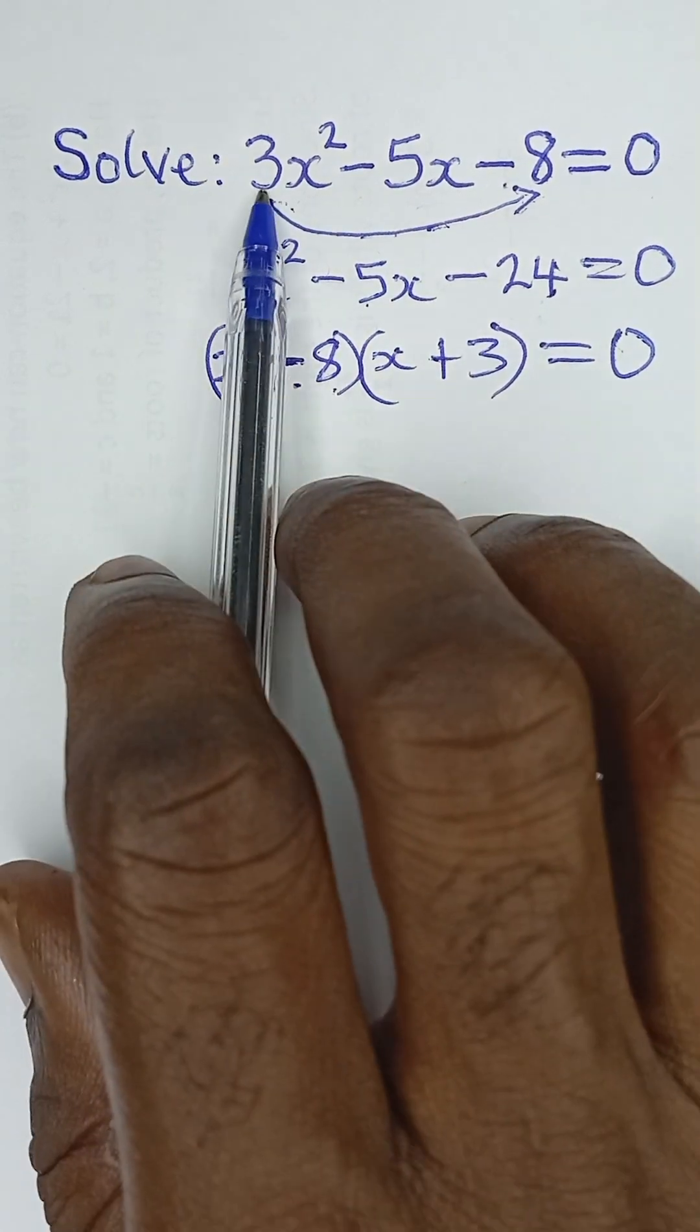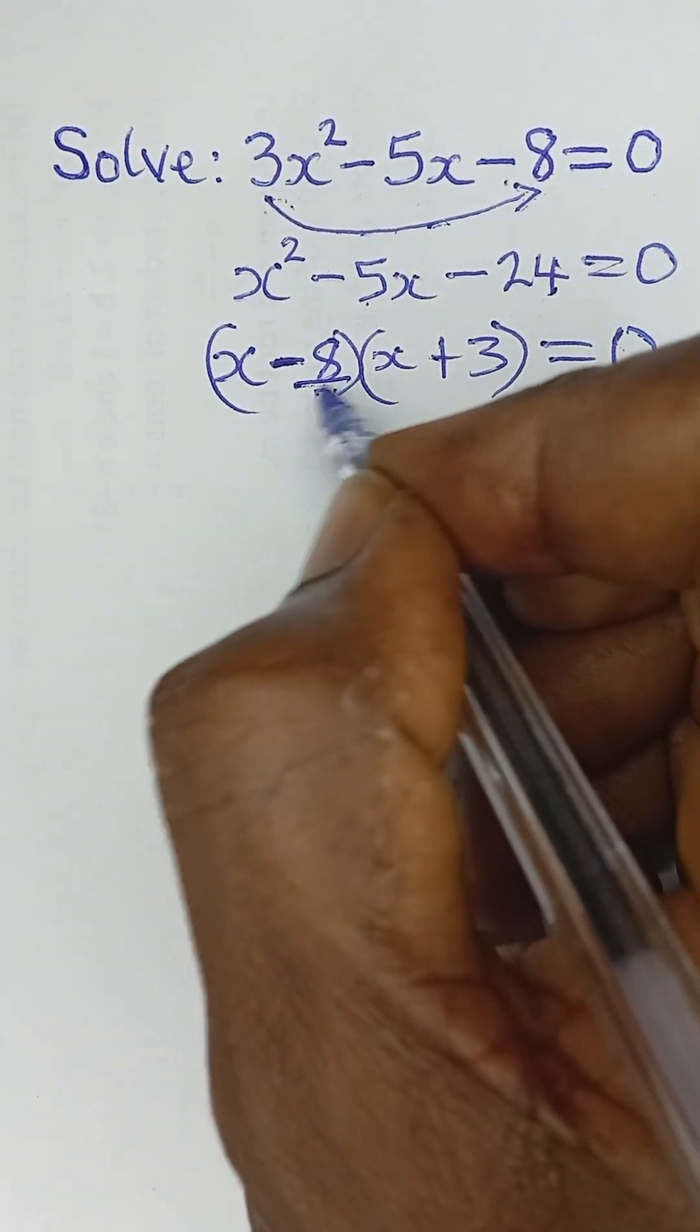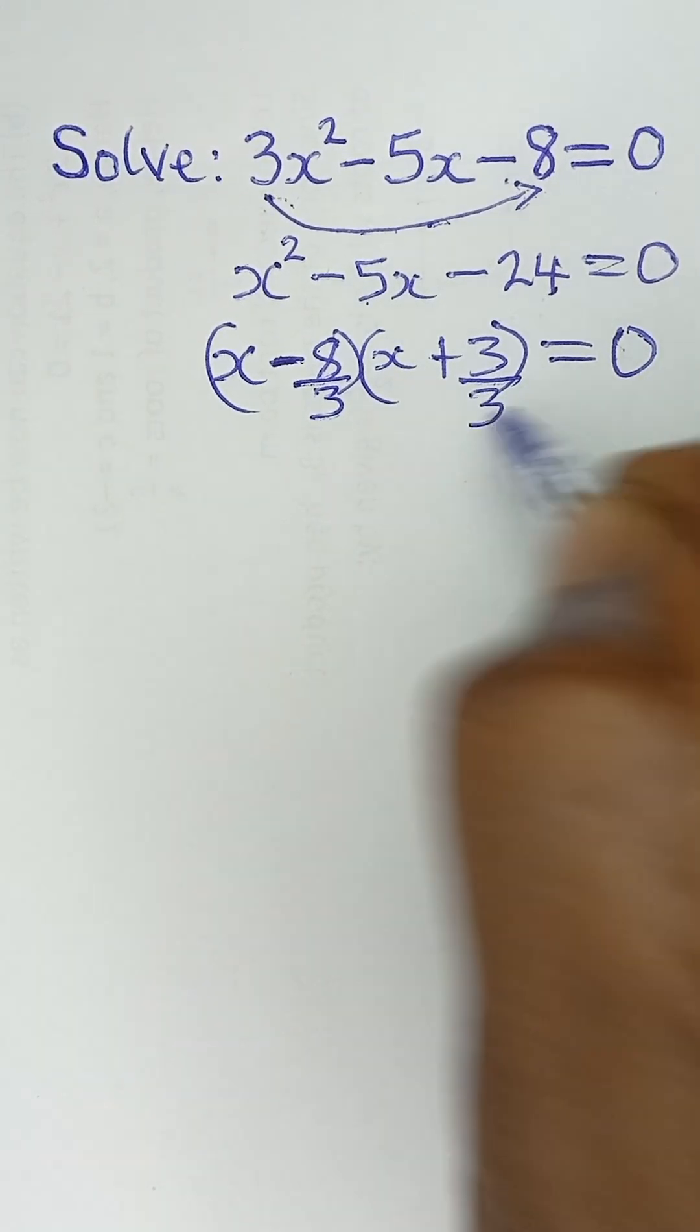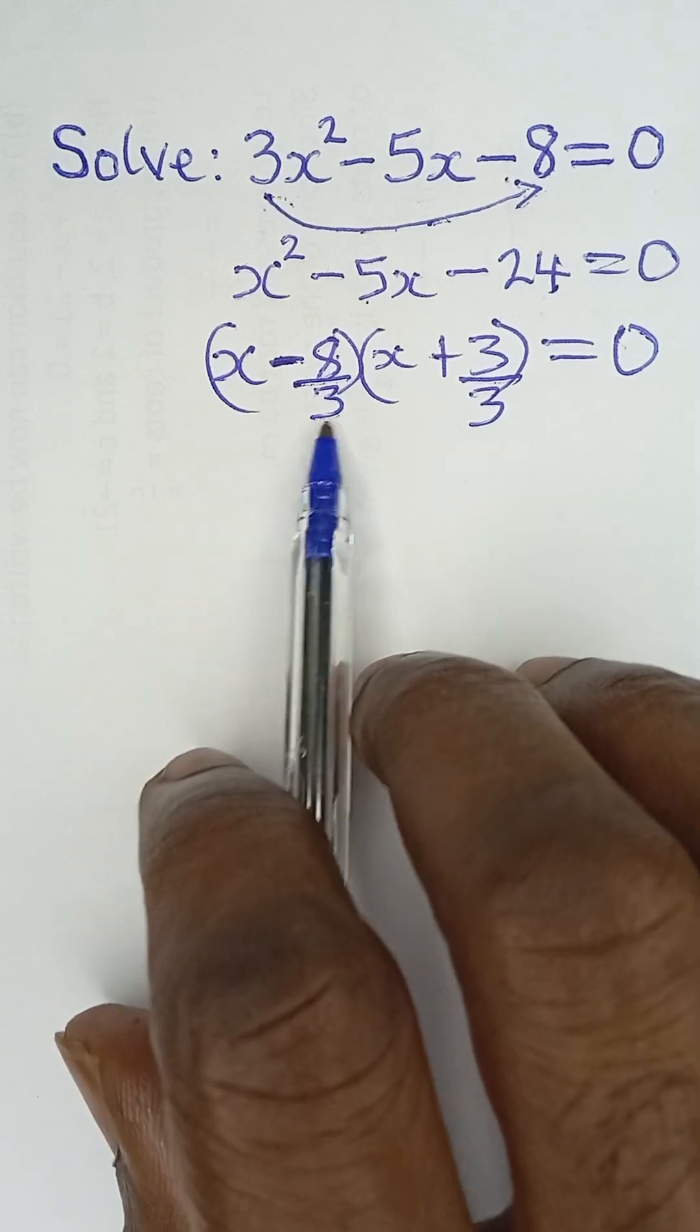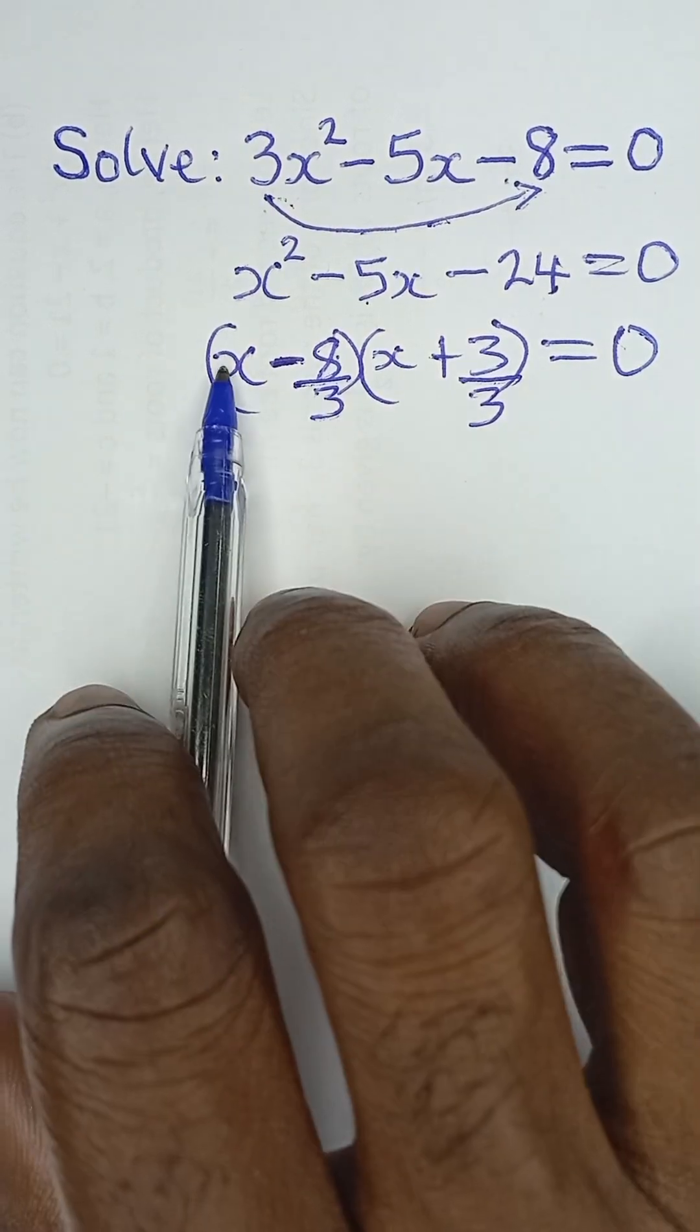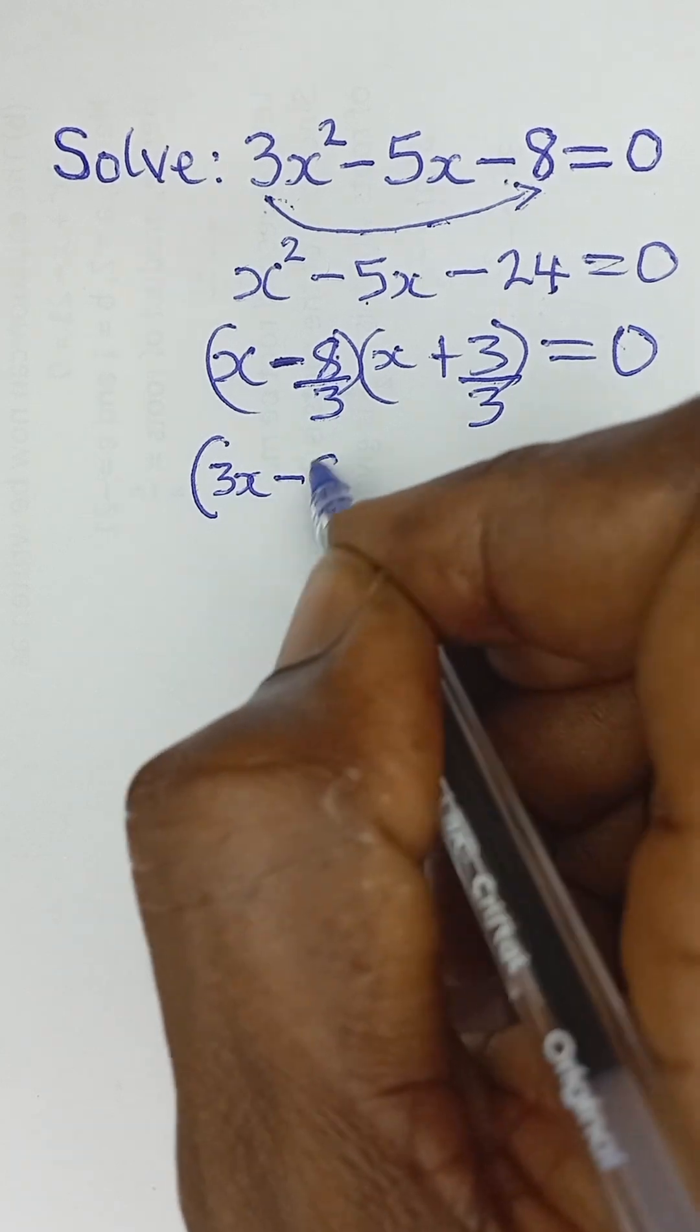Now, going back to this 3 that we removed initially, what we now need to do is to put the 3 back under these factors that we have here. So if I put this 3 back, 8 divided by 3 will not give us a whole number. So we can just use this 3 to multiply x here. And that becomes 3x and then minus 8.